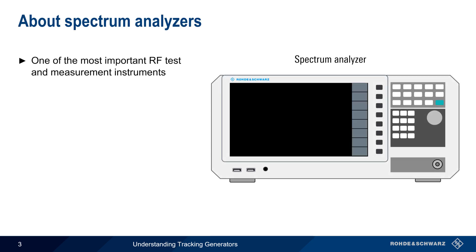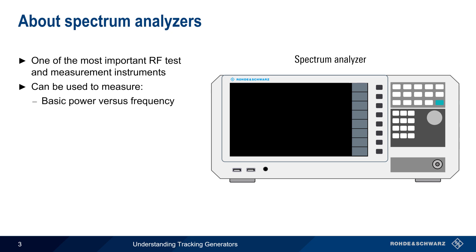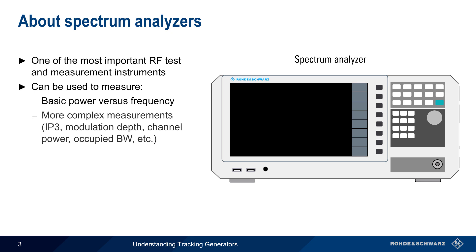Spectrum analyzers are one of the most important instruments in radiofrequency test and measurement, and they're generally used to make three different types of measurements. The first is a basic display of power versus frequency. The second consists of more complex measurements such as third-order intercept, modulation depth, channel power, etc. The third type is analysis and/or decoding of digitally modulated signals, such as Wi-Fi or cellular.